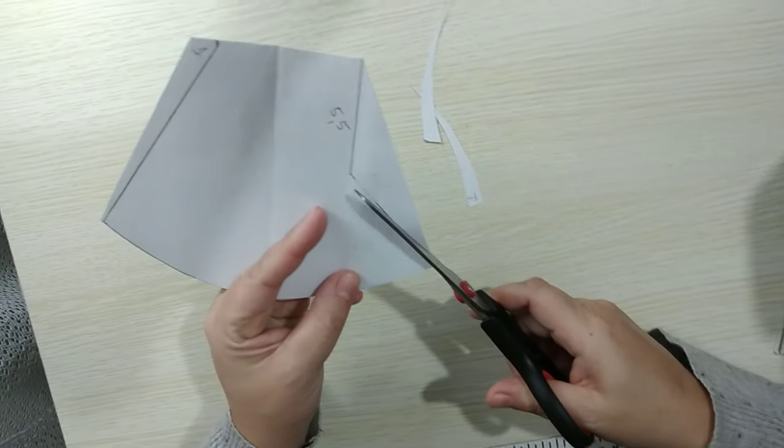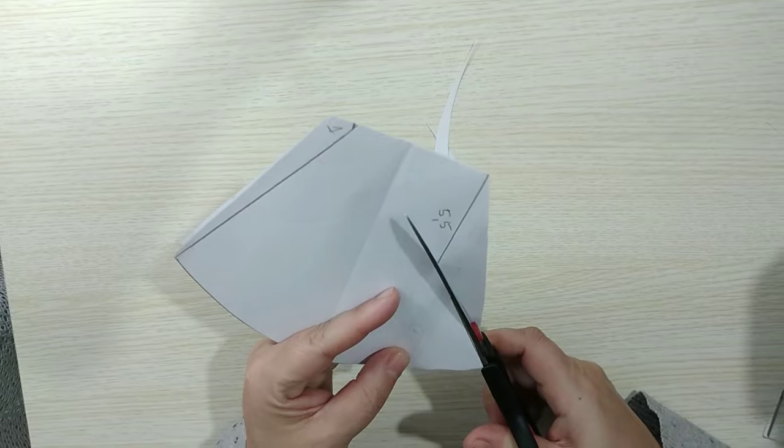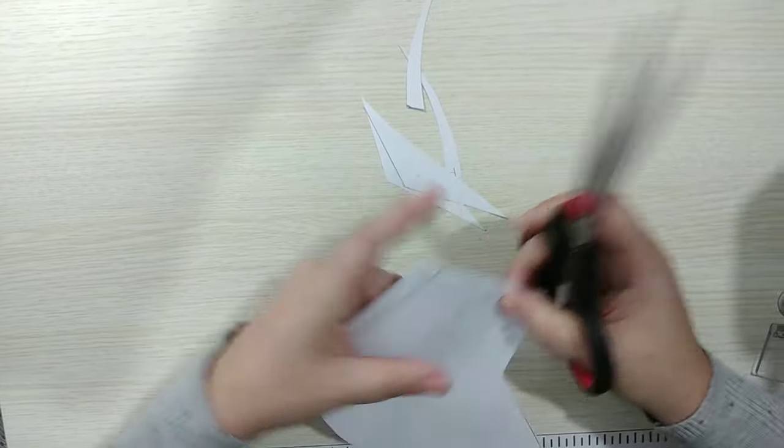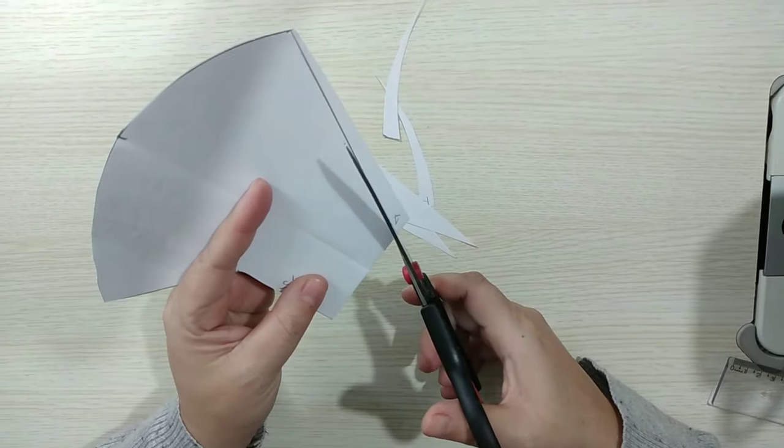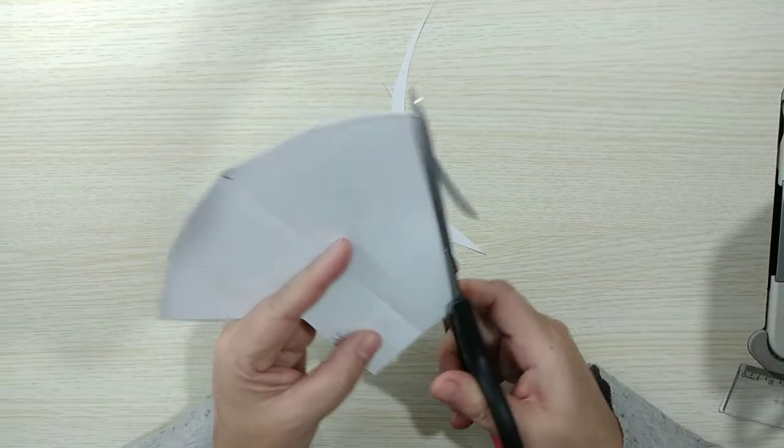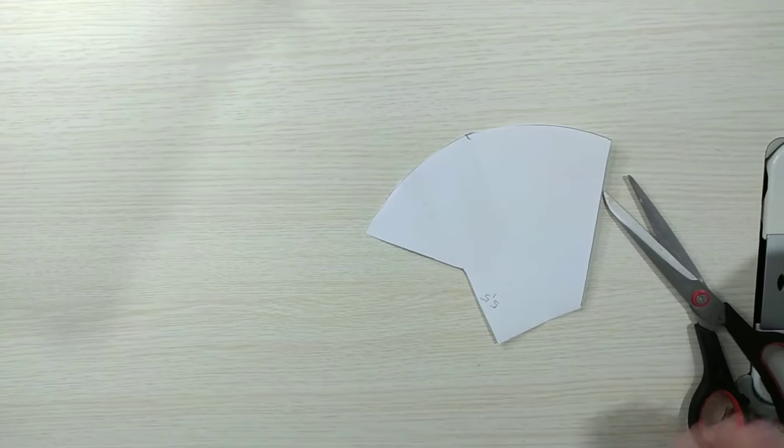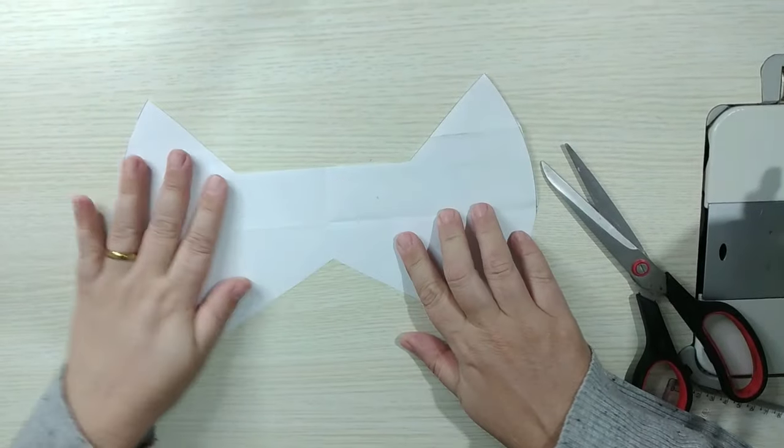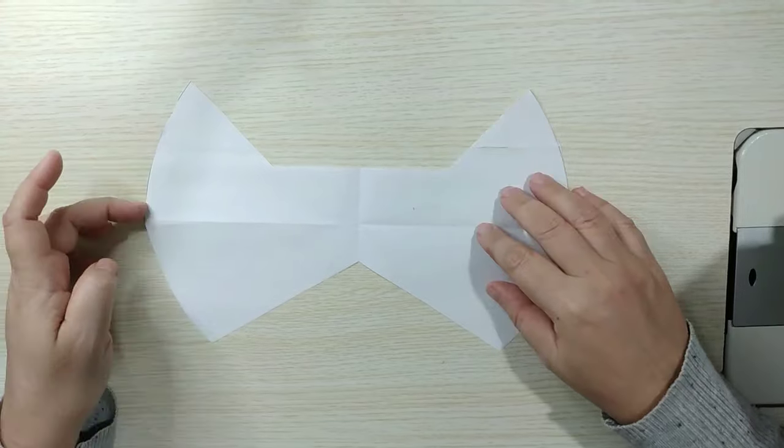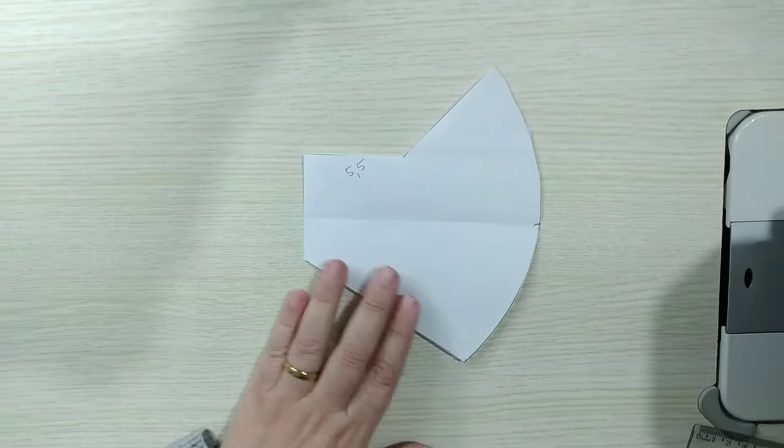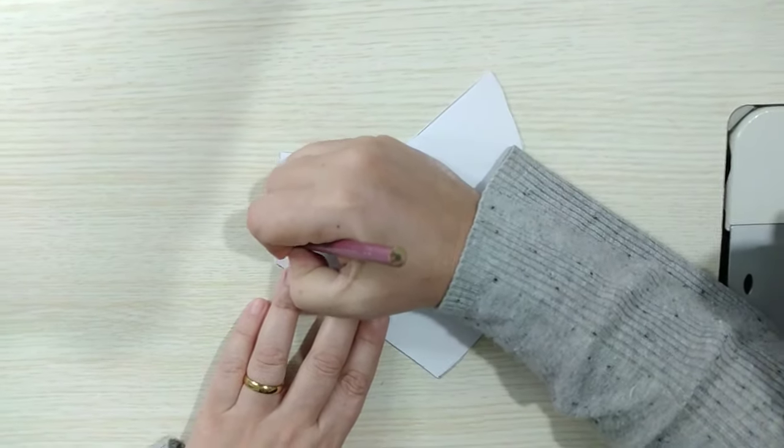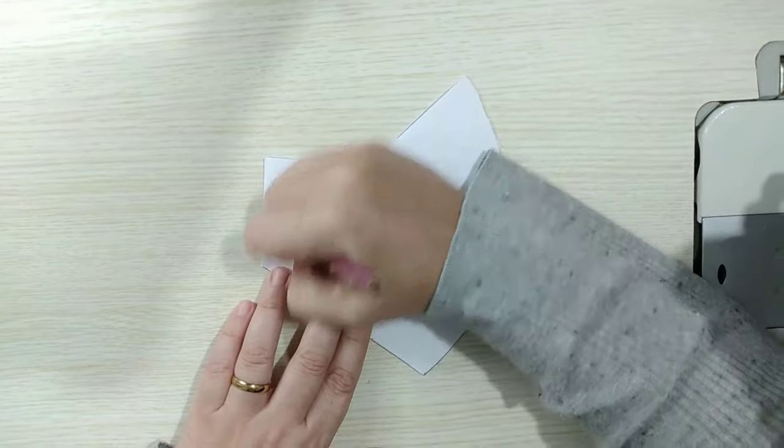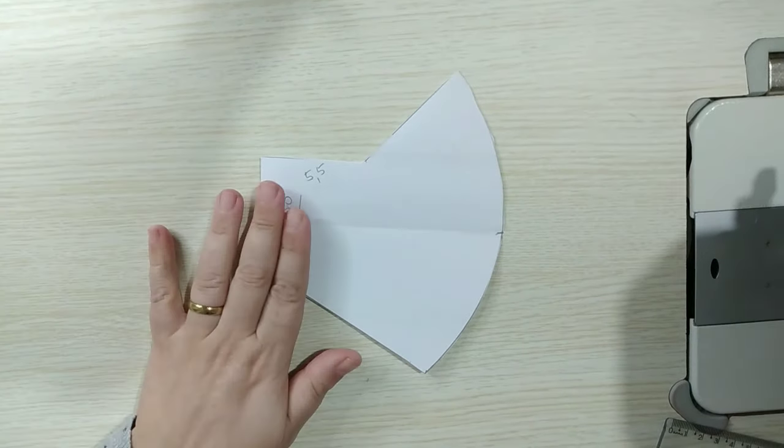Agora é só cortar bem em cima do risco. Essa parte aqui desse bico é a parte do nariz. E aqui também. Essa diferençazinha aqui do queixo. Vai ficar bem bacana. E aí vai ficar assim. Nosso molde. Eu vou deixar pra vocês ele dobrado assim. Aí vou até escrever aqui. Dobra do tecido. Que aí vocês vão cortar ele dobrado como eu vou fazer aqui.